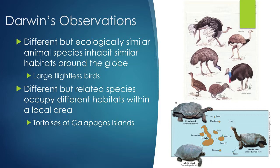He also noted that different but related species occupied different habitats within a specific area. This references the tortoises on the Galapagos Islands. There are three different types of tortoises in the Galapagos — they're related, but still very different in body shape, specifically referring to their necks.